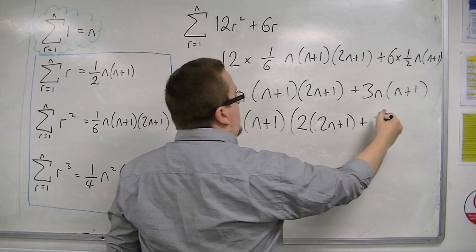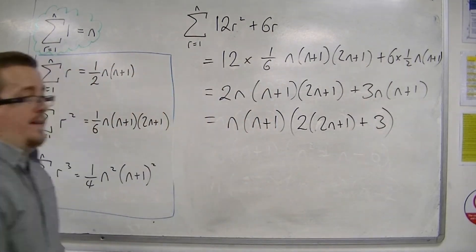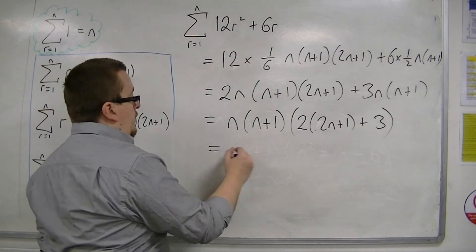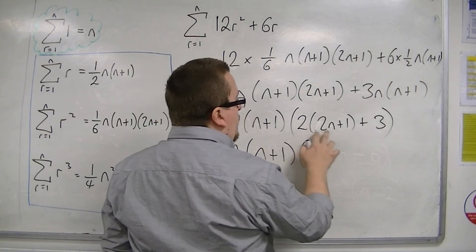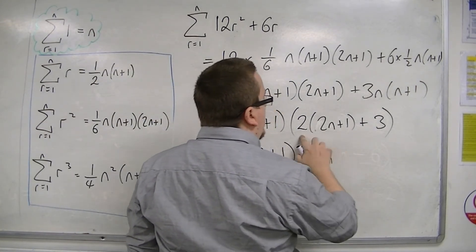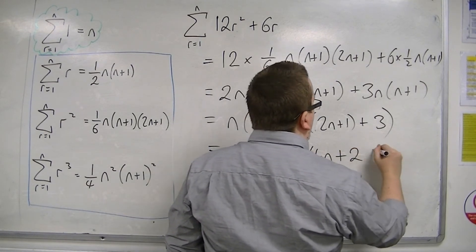4n plus 3. That's all we have left there. So we've got n, n plus 1. Then we've got 2 times 2n, so 4n, plus 2, plus 3.